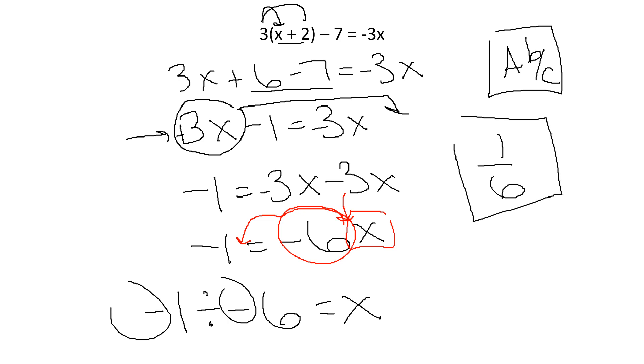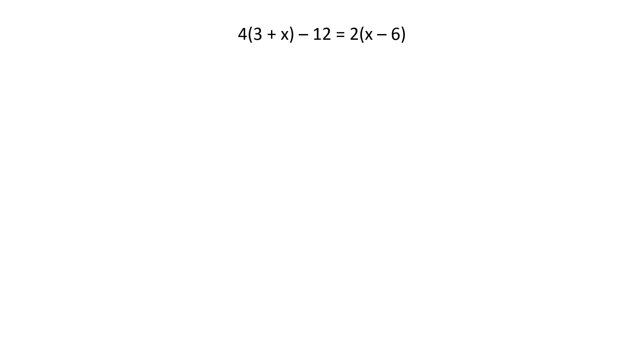Okay. A little bit of a longer one. Start inside your parentheses. I can't do anything here. I can't do anything here. So I'm going to distribute this. 4 times 3 is 12. 4 times x, remember, plus. 4 times x is 4x. I'm not touching that minus 12 or the equal sign. Now I'm going to do the same thing. 2 times x is 2x. 2 times negative 6 is minus 12. So the first step is to distribute. If you can distribute, you need to distribute.